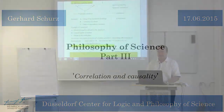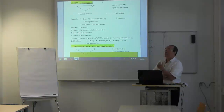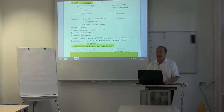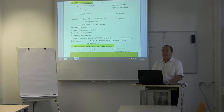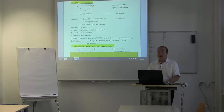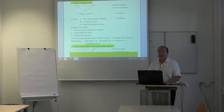Welcome to the Philosophy of Science lecture. In the last lecture we spoke about the relation between correlation and causality. We said that we cannot infer from a correlation between two variables A and B to a causal relation between them, because there may be hidden variables responsible for that correlation. We discussed the case of a hidden common cause C.